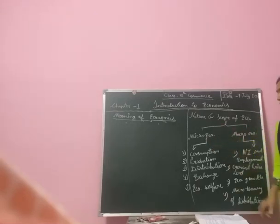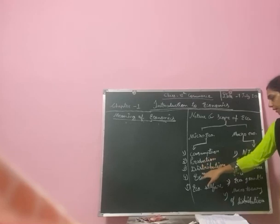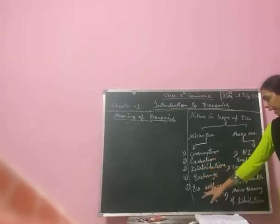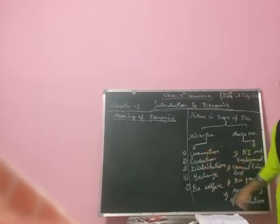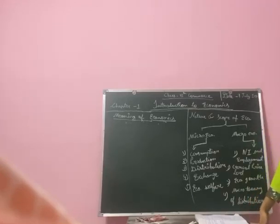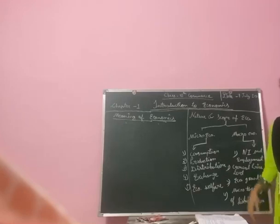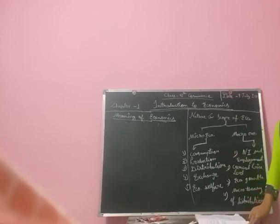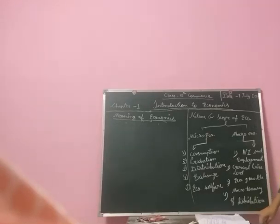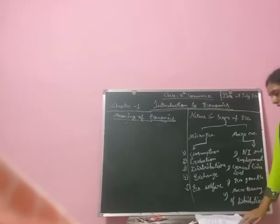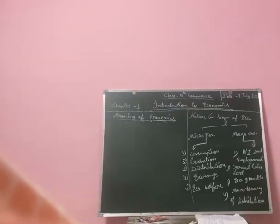Microeconomics basically includes five terms: consumption, production, distribution, exchange, and economic welfare. Consumption means a person who owns wants and consumes by giving money. Production is basically a producer who creates goods and services to earn money so that customer needs are completed. Distribution is basically the allocation of goods and services.